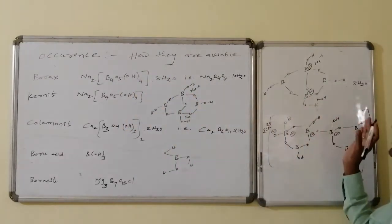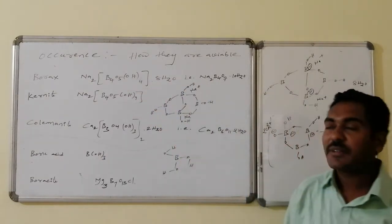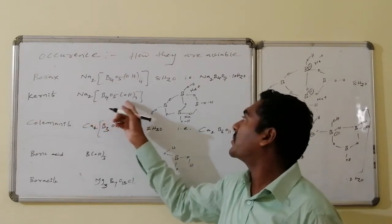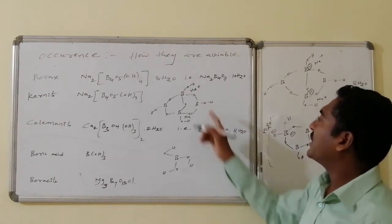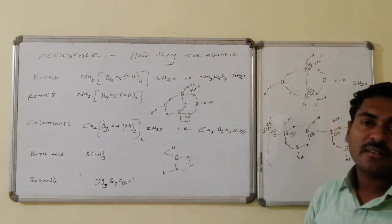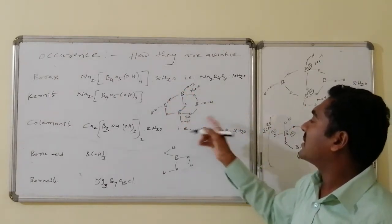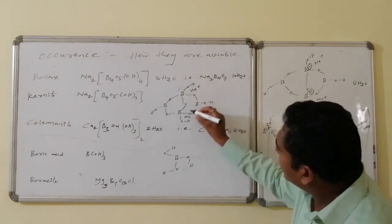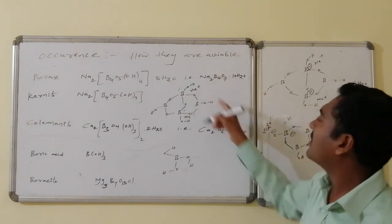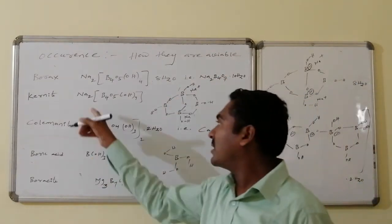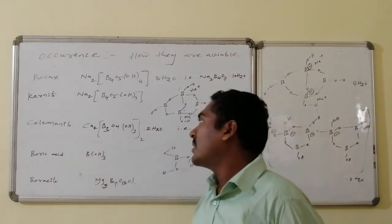Kernite is formed by removing the 8 water molecules from Borax, giving the remaining structure Na₂B₄O₅(OH)₄. The boron-oxygen alternating connectivity is present, forming an 8-membered ring system. Two boron atoms carry one unit of negative charge each, counterbalanced by two sodium atoms, confirming the formula Na₂B₄O₅(OH)₄.